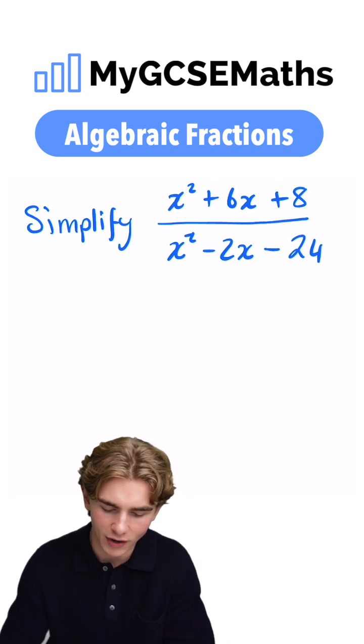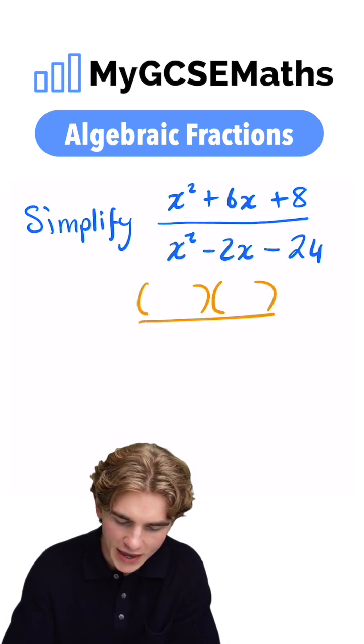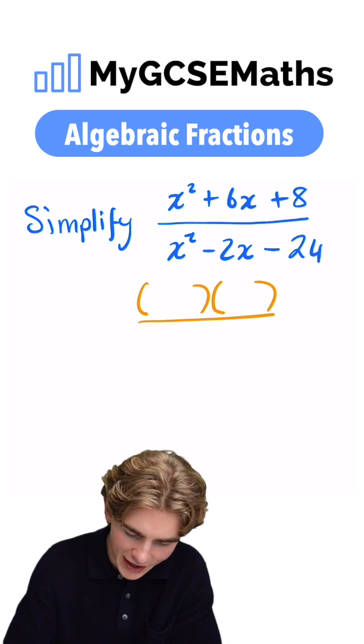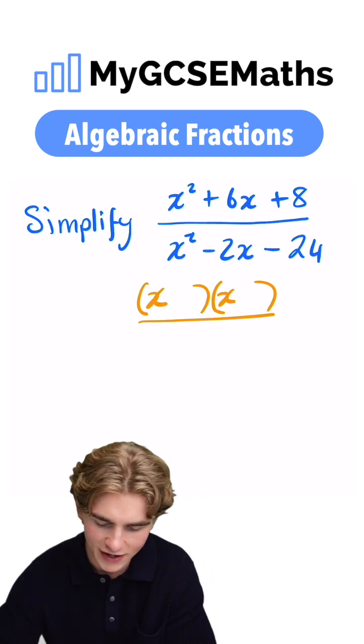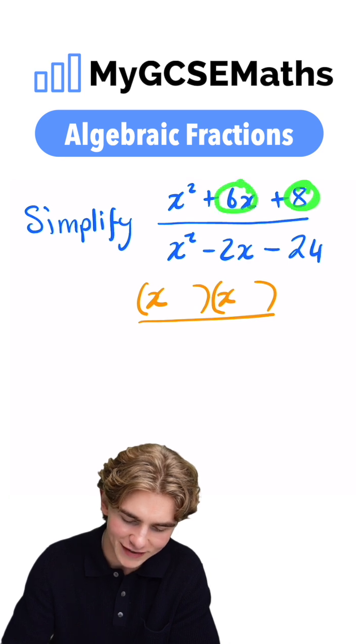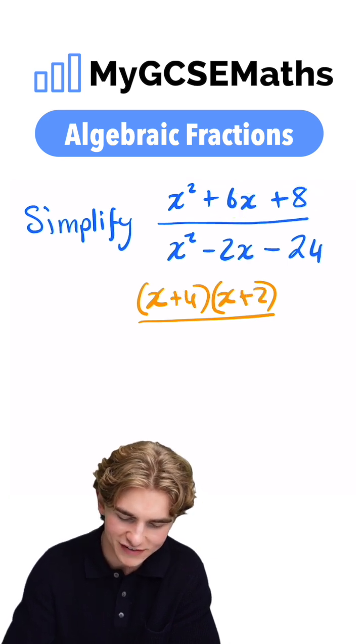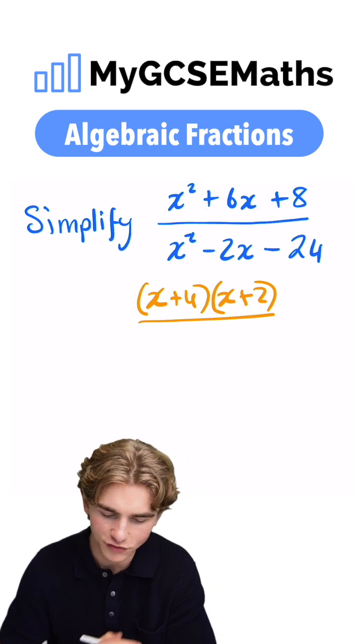When we factorize a quadratic, we write it as two brackets multiplied by each other. Here we have an x squared at the front, so we're going to have an x at the front and an x at the front of this extra bracket. We need two numbers which multiply to give 8 and add to give 6. 4 times by 2 is 8 and 4 plus 2 is 6. So we can write this top as x plus 4 times by x plus 2.